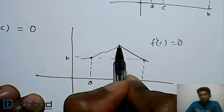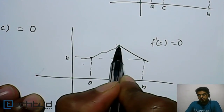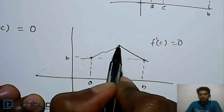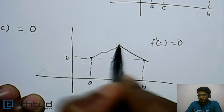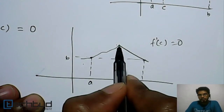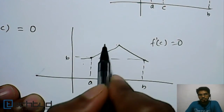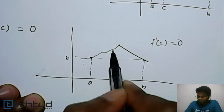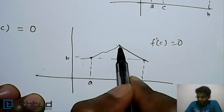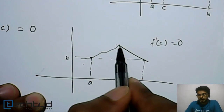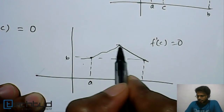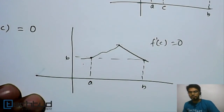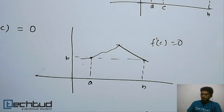This curve has a sudden change — a corner — at one point. Having a corner in a curve means it is not differentiable at that point. There is a sudden change in slope, so it is not differentiable there, and therefore it does not satisfy the conditions of Rolle's Theorem.